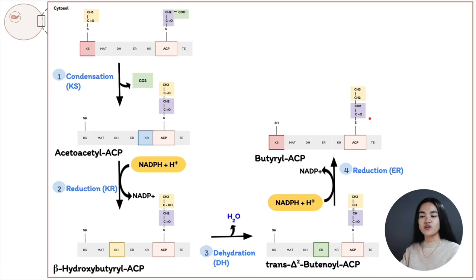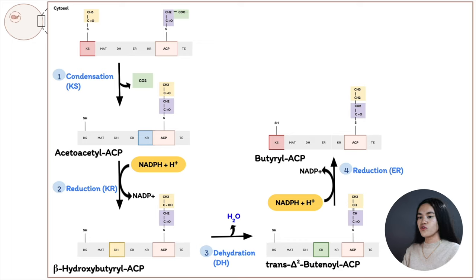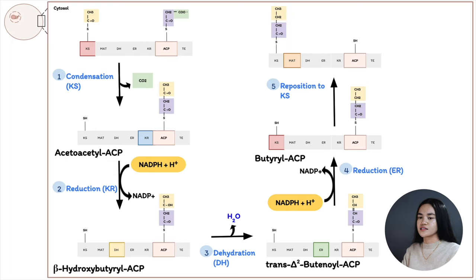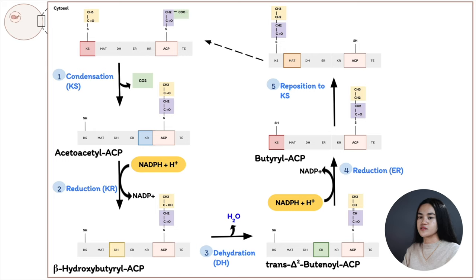We now have a four-carbon fatty acyl-ACP which is saturated, and the cycle will start over again, continuing to lengthen the chain by two carbon atoms per cycle. Before the cycle repeats, the butyryl group is transferred onto the KS domain, so another malonyl group can attach to the thiol group of ACP. That completes cycle one of fatty acid synthesis.